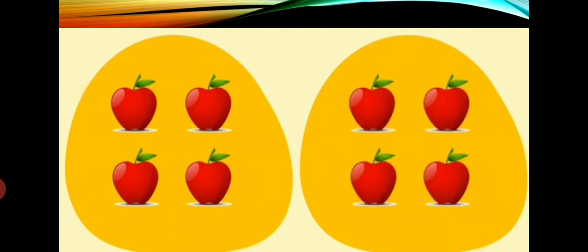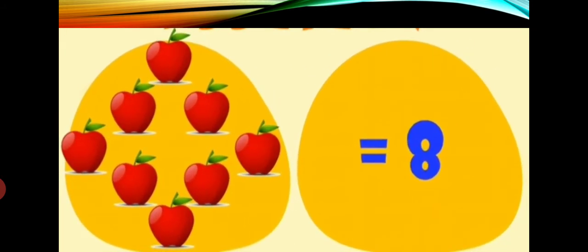Now do the next. Again, you can see 2 trays. Count the number of apples in the first tray — 1, 2, 3, 4. Count the number of apples in the second tray — 1, 2, 3, 4. So 4 apples are there in the first tray and 4 apples are there in the second tray. Now add — add the apples in both trays: 1, 2, 3, 4, 5, 6, 7, 8. Total number of apples are 8.